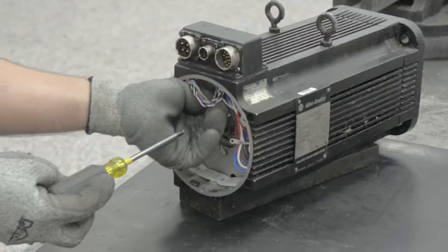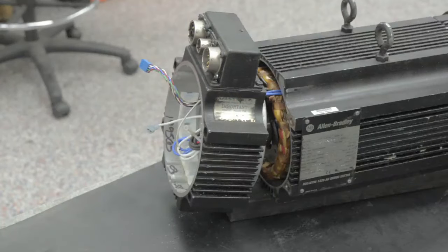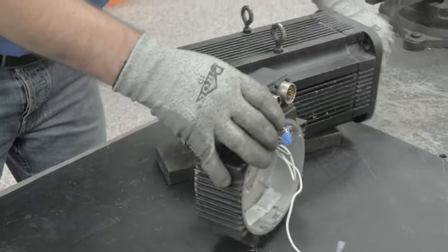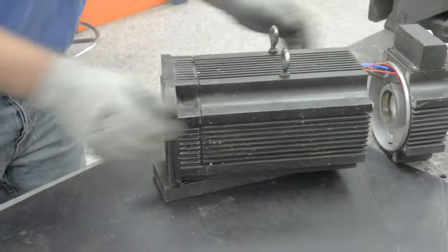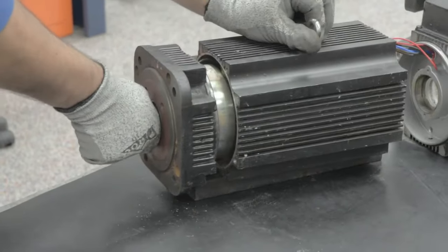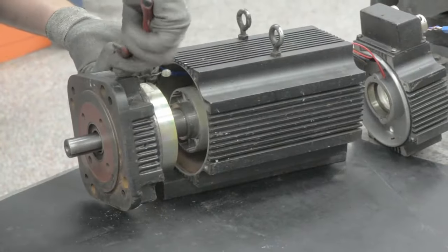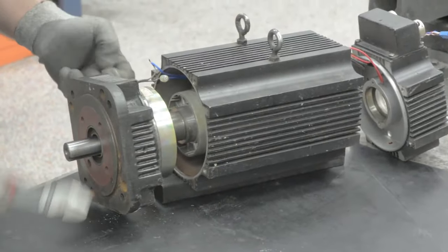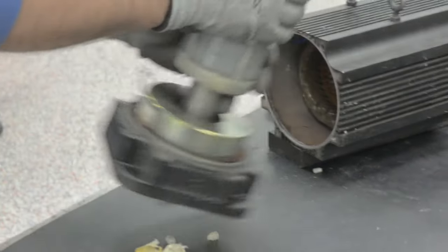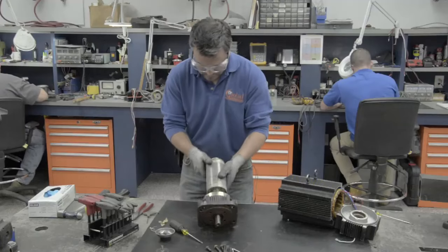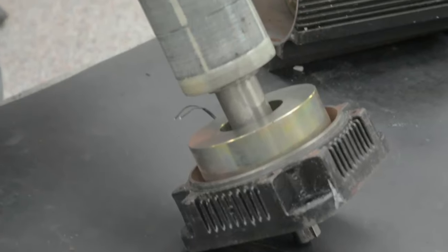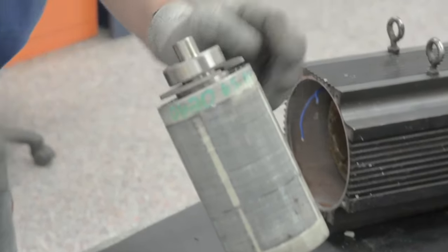Next, we will remove the end bell and take the encoder down the hall to be repaired on the industrial electronic side. Then we'll clean the motor and dry it. Now we are removing the front end bell. Here we'll disconnect the brake and remove it from the stator. We have to inspect the rotor and the shaft.